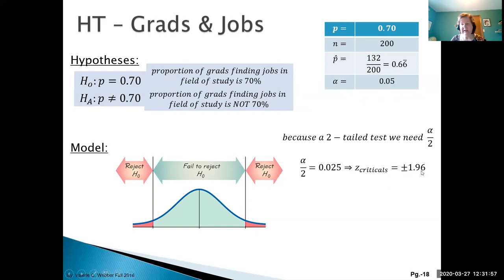There's our two alpha over 2's, and our two Z criticals - one on the low side, one on the high side. There's our population proportion currently accepted at 70%.